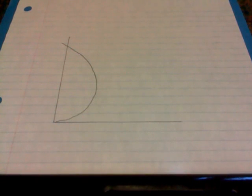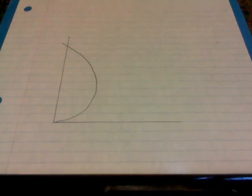What we're going to do is we're going to trisect an angle using the spiral of Archimedes. Here you see we have the spiral of Archimedes already drawn on our paper.